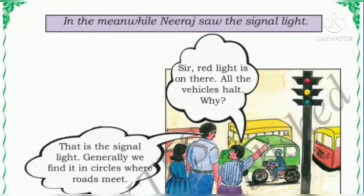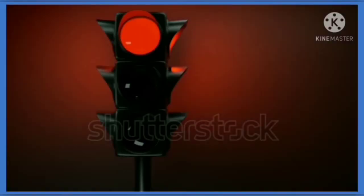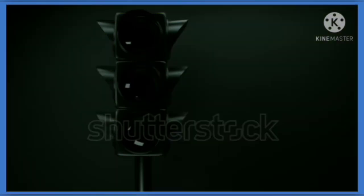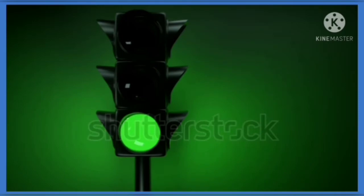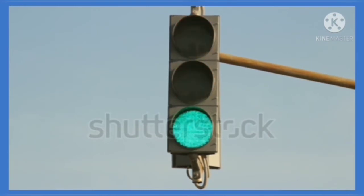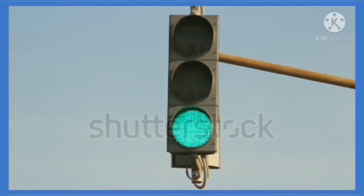One of the students was fascinated to see different colored lights at the circle. She asked her teacher why the vehicles halt when the red light is on. The teacher explained that these are signal lights, placed in circles to help traffic policemen regulate the traffic. Each color in the lights gives specific instructions to the movement of vehicles.